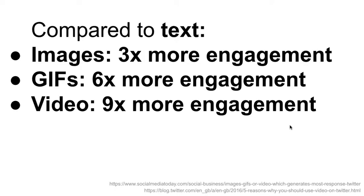Tweets with images tended to get three times more engagement than text, but GIFs were even more effective than images, and video was even more effective than GIFs. So consider moving images rather than just images, but if you can't get moving images, something visual is going to be better than text. In the text itself, aim to have quotes, numbers, hashtags, and elements like that.